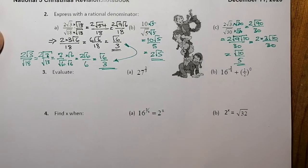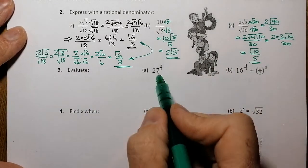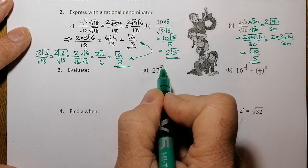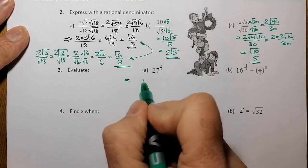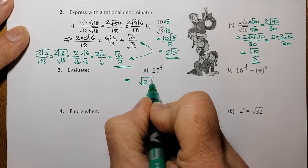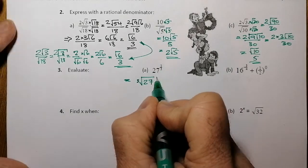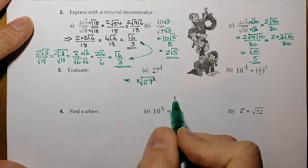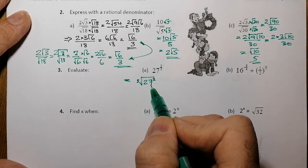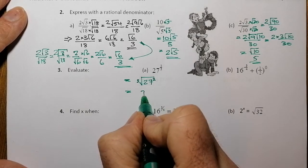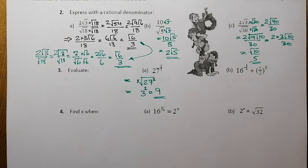Now evaluating numbers to fractional powers. I've got 27 to the power of 2 over 3 — a fractional index. I'll convert to root form: the denominator is the root, the numerator is the power. So I take the cube root of 27, which gives 3, and then square it. That works out to be a straightforward 9.